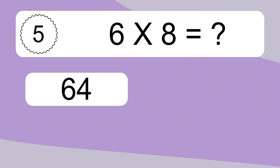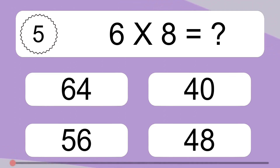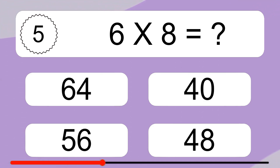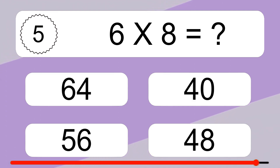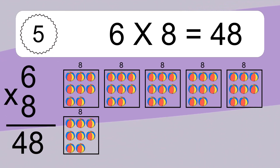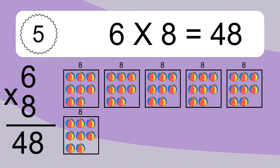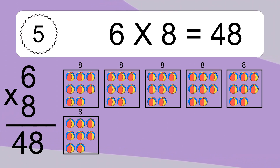6 times 8 equals what? 6 times 8 equals 48. We have 6 boxes, and each box has 8 colorful balls inside. If you count all the balls in all the boxes together, you will have 6 times 8 balls. This equals 48 balls.